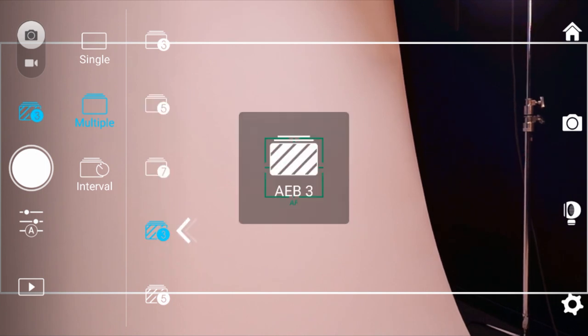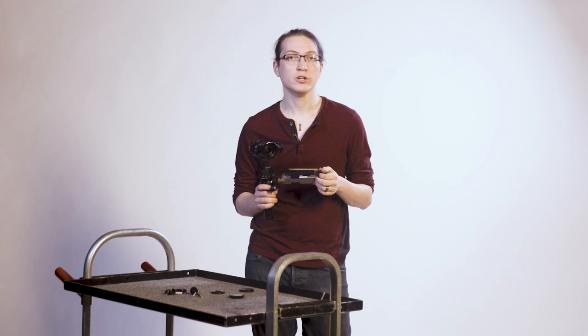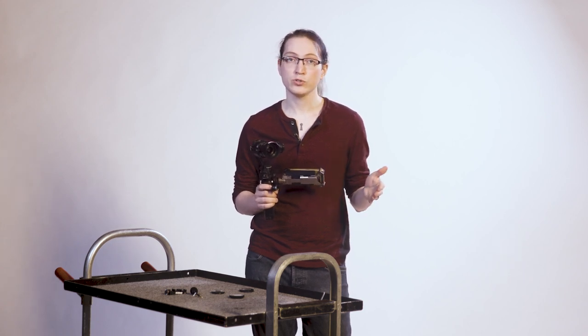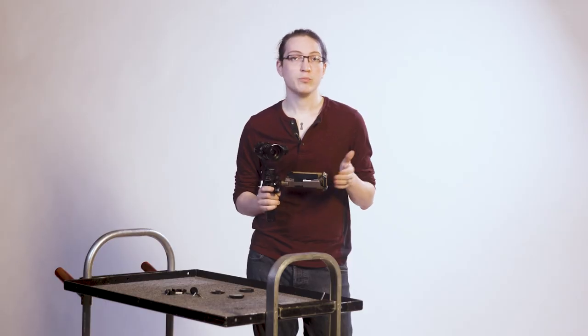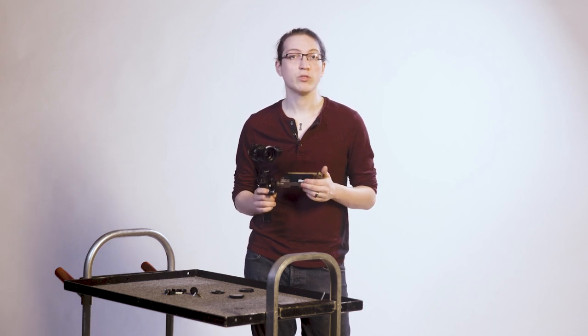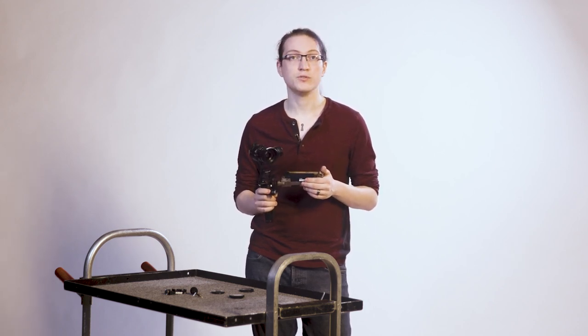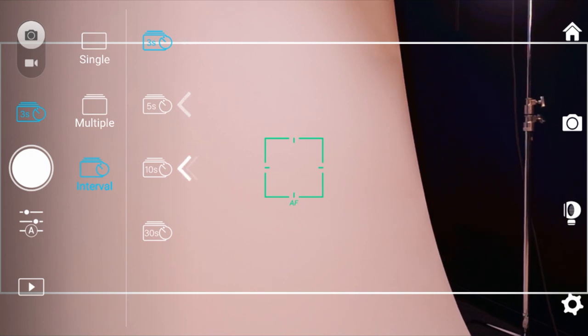Or what is called auto exposure bracketing, or AEB for short. In AEB, the camera will take a picture and then take additional pictures at a lower exposure level and then a higher exposure level. You will have an option of 3 shot or 5 shot burst in AEB. In 3 shot, you will have your base image and then one lower exposed and one higher exposed copy of the same image. And with 5 shot, you will have two lower exposed and then two higher exposed. Auto bracketing is a great way to ensure you have a properly exposed image and wide exposure range once you get into post production. In interval mode, you will be able to select either a 3 second, 5 second, 10 second, or 30 second interval between shots.